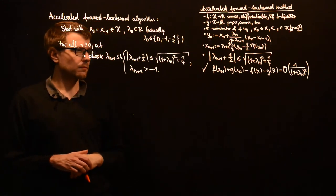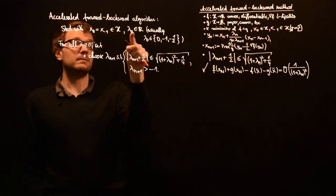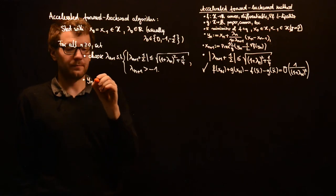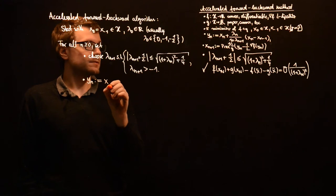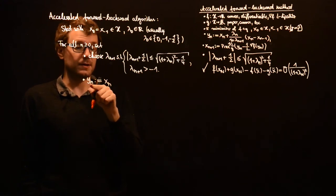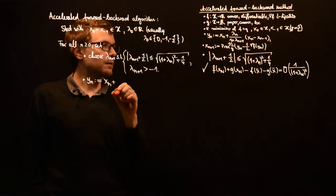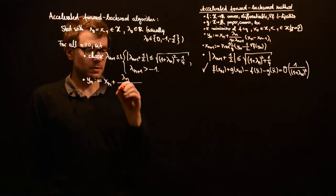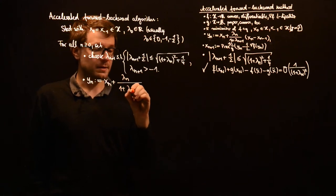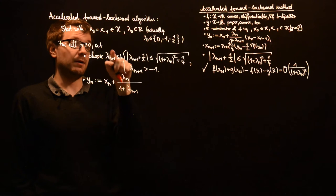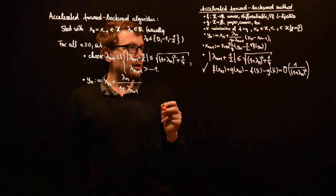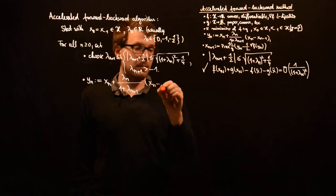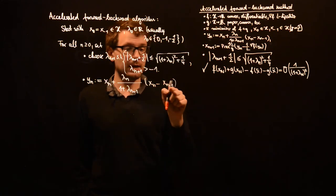What you can do is you can just take equality in this first inequality and then you will be fine as long as you start with one of these values. And then you have lambda_0, you have lambda_1 by this. So now you can start to calculate y_n. And y_n is x_n plus lambda_n divided by 1 plus lambda_{n+1} times x_n minus x_{n-1}.